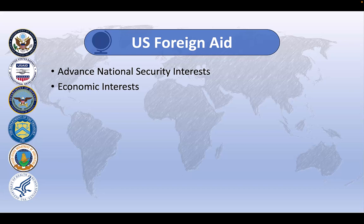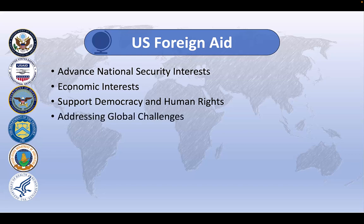Foreign aid is often tied to promoting democratic governance and human rights, as well as the rule of law. The US may condition aid on recipient countries' adherence to democratic practices, respect for human rights, and combating corruption. Aid can support initiatives such as electoral reform, civil society development, human rights advocacy, and the strengthening of independent media, promoting the spread of democratic values and good governance. Foreign aid also enables the US to address global challenges that transcend national borders. It can be used to combat infectious diseases, promote environmental sustainability, respond to humanitarian crises, support education and health care systems, and to address poverty and inequality. Aid can contribute to achieving the UN's sustainable development goals, foster international cooperation, as well as demonstrating US leadership in addressing pressing global issues.